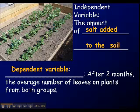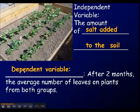A lot of times in an experiment, the independent variable might be time — it happens all by itself, it's very independent. The dependent variable is going to be totally dependent; it will change based on what's going on with the independent variable.